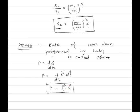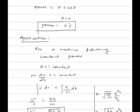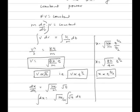Power of a machine is given by F v cos theta. If theta equals zero, power equals F into v. For a machine delivering constant power, m into v equals constant, meaning the force is given by m d/dt of v equals constant. Integrating gives v squared by 2 equals kt upon m, so v equals under root of (2k/m) into t. Therefore v is proportional to square root of t, or v is proportional to t to the power 1 by 2.